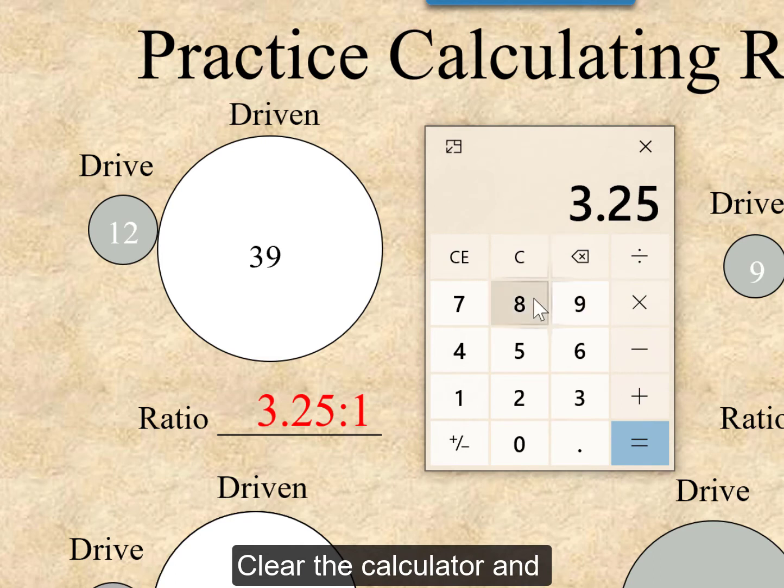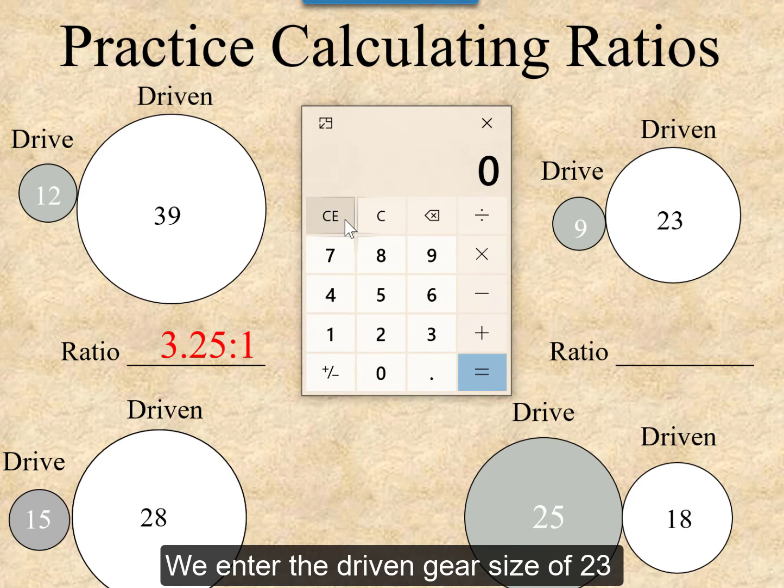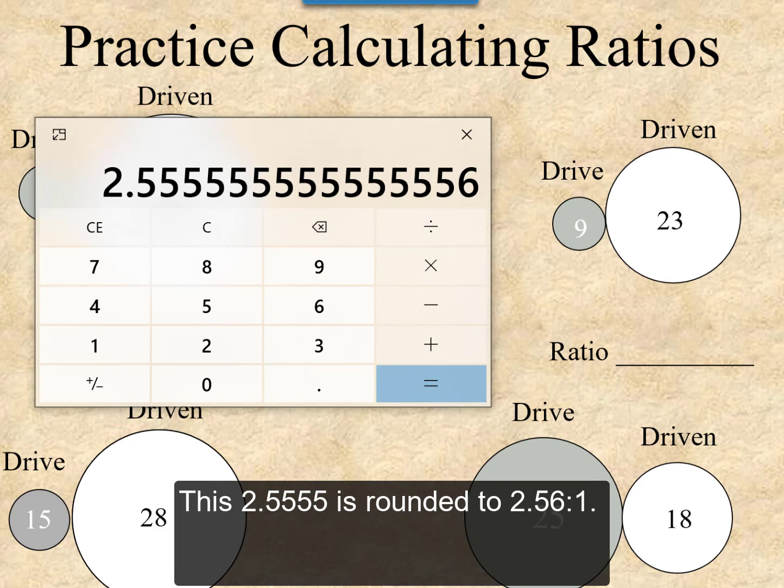We're going to clear the calculator and take a look at the second problem. We enter the driven gear size of 23 divided by the drive gear size of 9. That will give us a really long ratio that will have to be rounded. This 2.5555 gets rounded to 2.56 to 1.